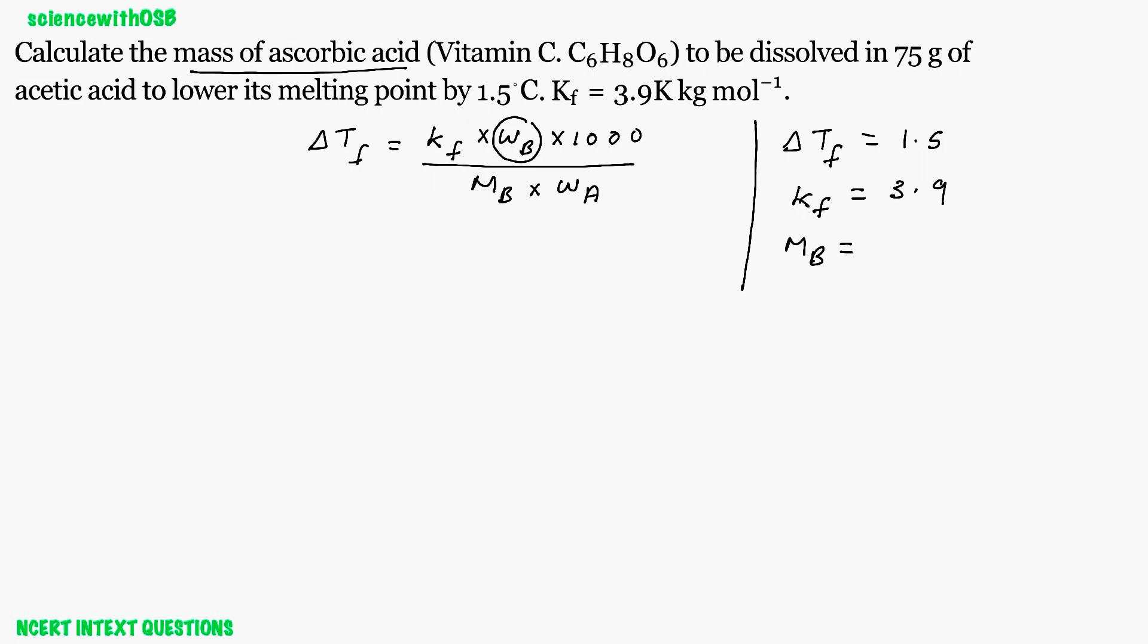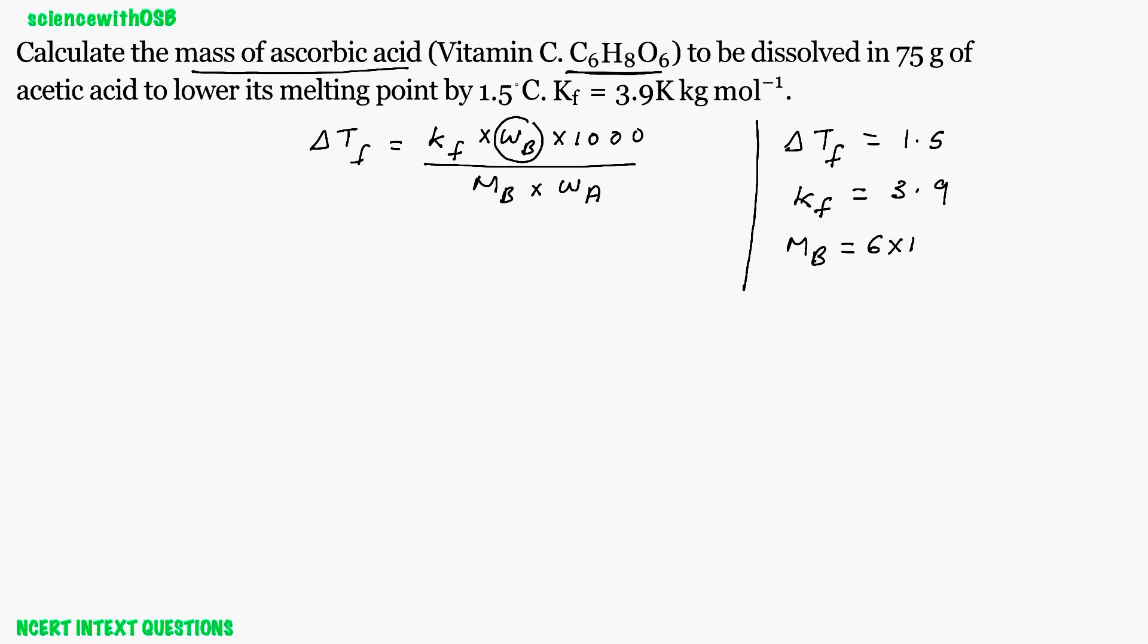Now mb, the molar mass of the solute, we can find it. C6H8O6: 6 × 12 plus 8 × 1 plus 6 × 16. On calculating, you will get 176.